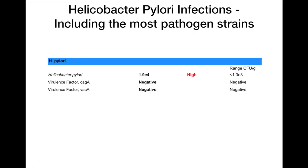Helicobacter pylori is one of the most common pathogenic strains. It infects mainly the stomach and upper part of the small intestine. It can cause many digestion problems but also be related to skin problems like acne rosacea, mood problems, other digestion pains, and reflux. This test not only measures how much you have in your system, but whether you have the more pathogenic strains of Helicobacter pylori, which can lead to things like ulcers.